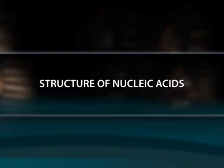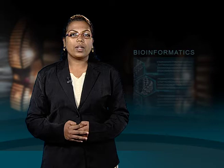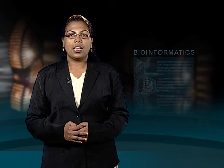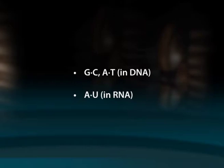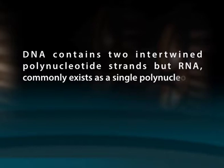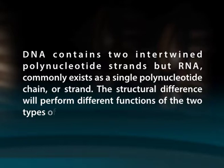The structure of nucleic acids: The linear sequence of nucleotides linked by phosphodiester bonds represents the primary structure of nucleic acids. Polynucleotides can twist and fold into three-dimensional conformations stabilized by non-covalent bonds. The bases in nucleic acids can interact via hydrogen bonds; the standard Watson-Crick base pairs are G-C and A-T in DNA, and A-U in RNA. Base pairing stabilizes the native 3D structures of DNA and RNA. While the primary structures of DNA and RNA are generally similar, their conformations are quite different: DNA contains two intertwined polynucleotide strands, whereas RNA commonly exists as a single polynucleotide chain.